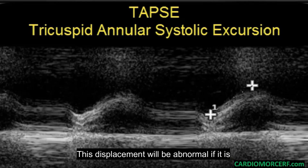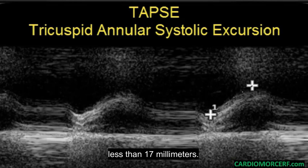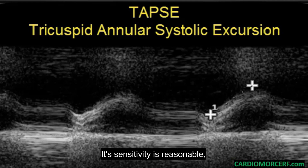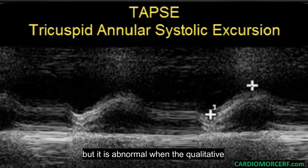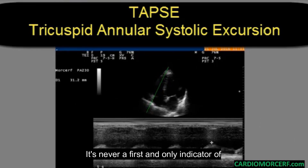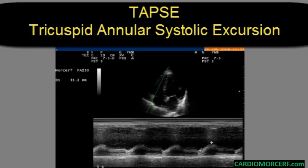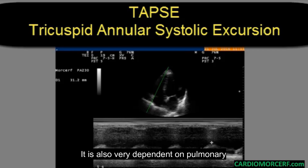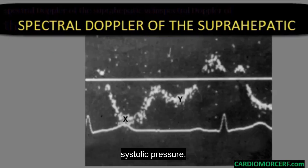This displacement will be abnormal if it is less than 17 millimeters; usually it is much higher. Its sensitivity is reasonable, but it is abnormal only when the qualitative evaluation of right ventricular contractility already indicates apparent dysfunction — it is never a first and only indicator of right ventricular dysfunction. It is also very dependent on pulmonary systolic pressure.